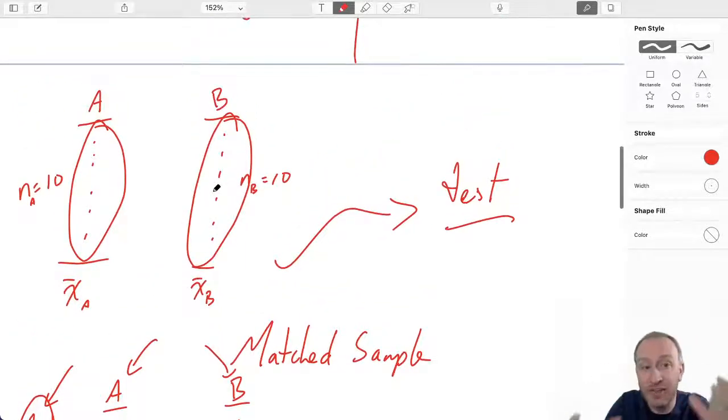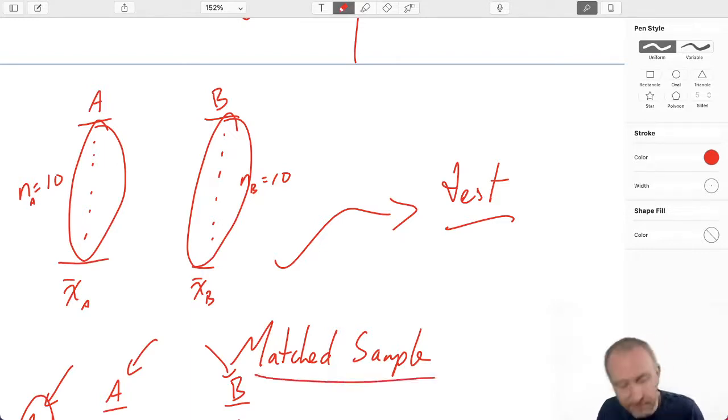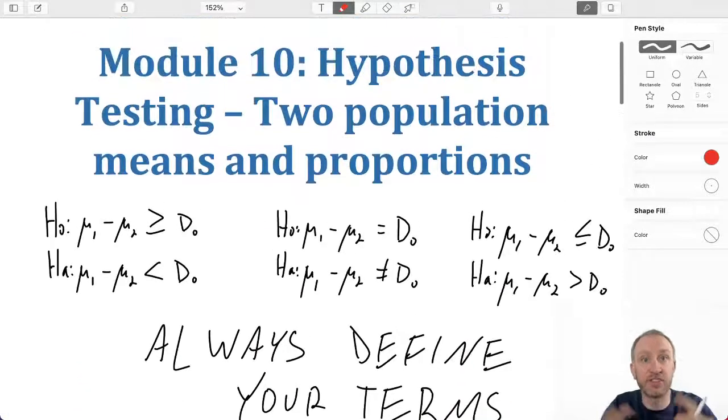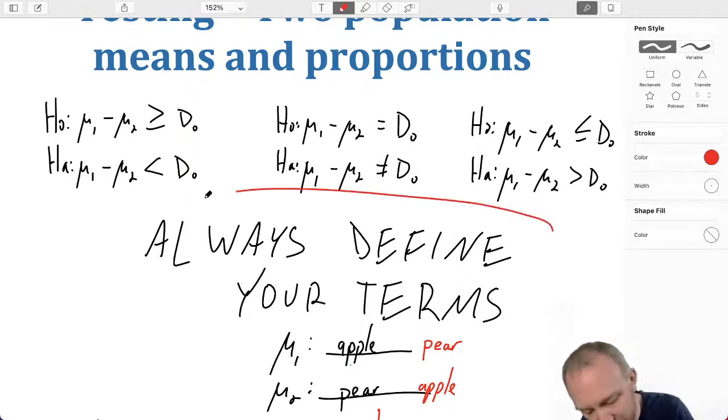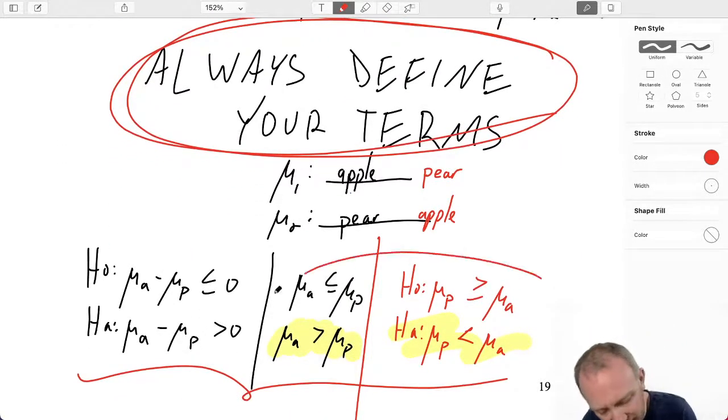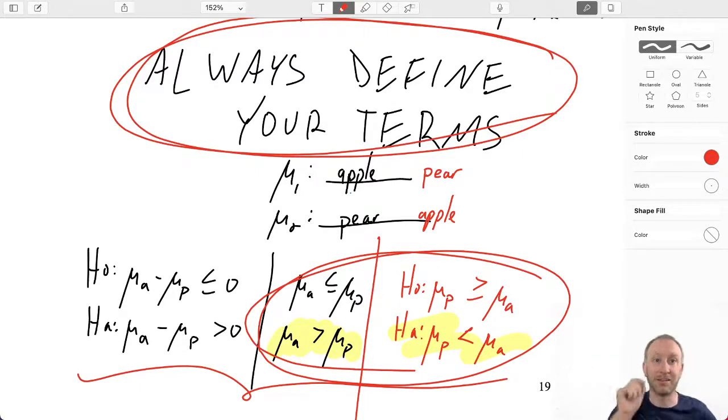So we're going to be looking at two different types of experimental designs, two different ways of collecting the data. And the big difference between those two is how we account for different sources of variation within that data set. So that gives us a good start on Module 10. We'll start off looking at two independent samples on means, and we will get into tests on proportions and matched samples. I cannot stress this enough: don't forget to define your terms because that determines whether or not an upper-tail test or a lower-tail test is appropriate.